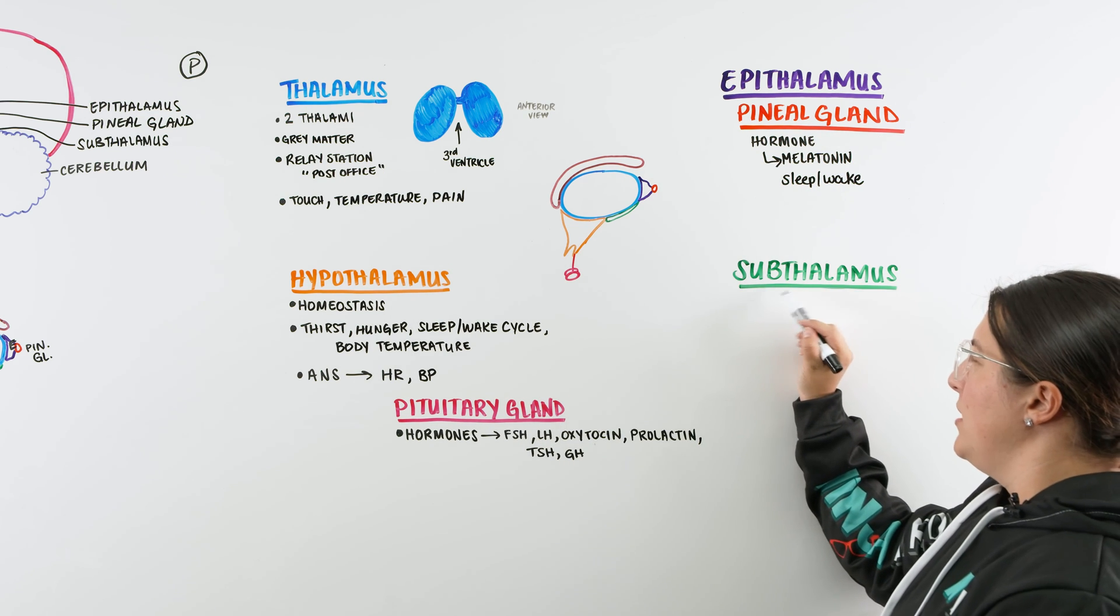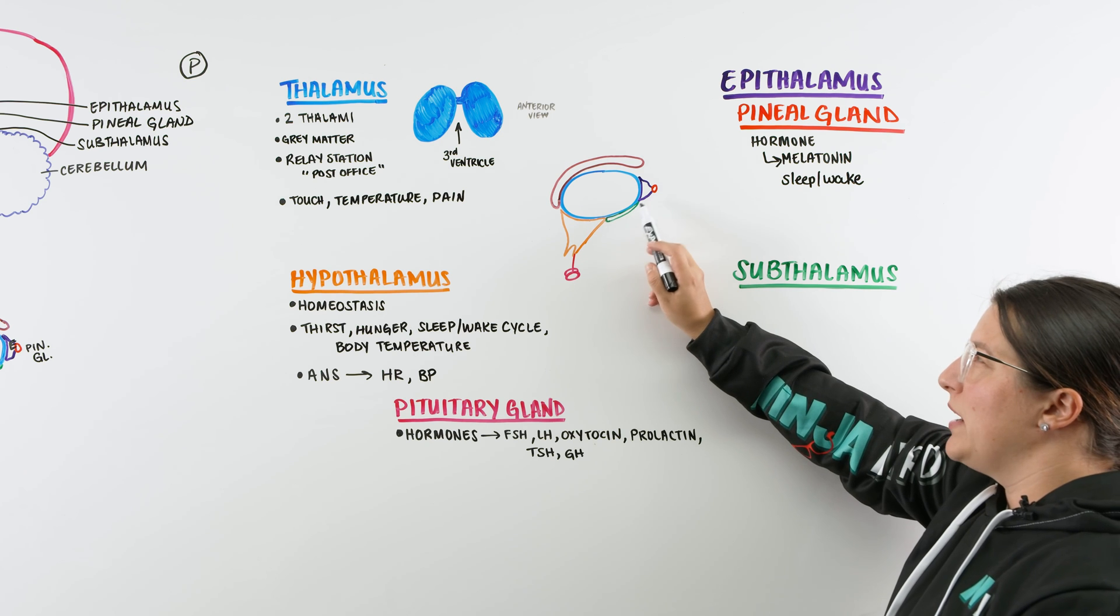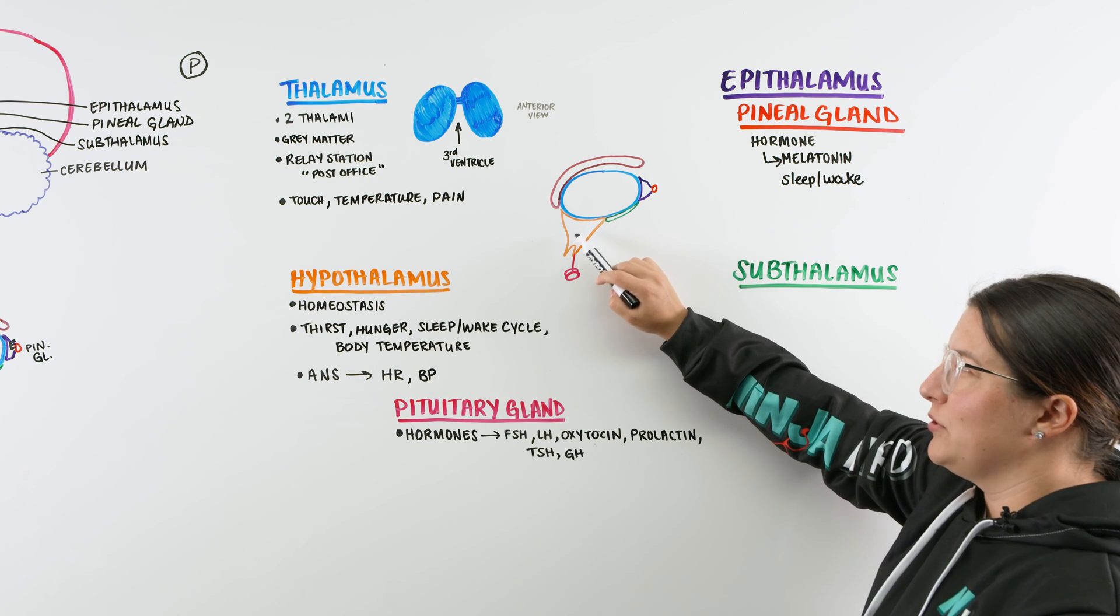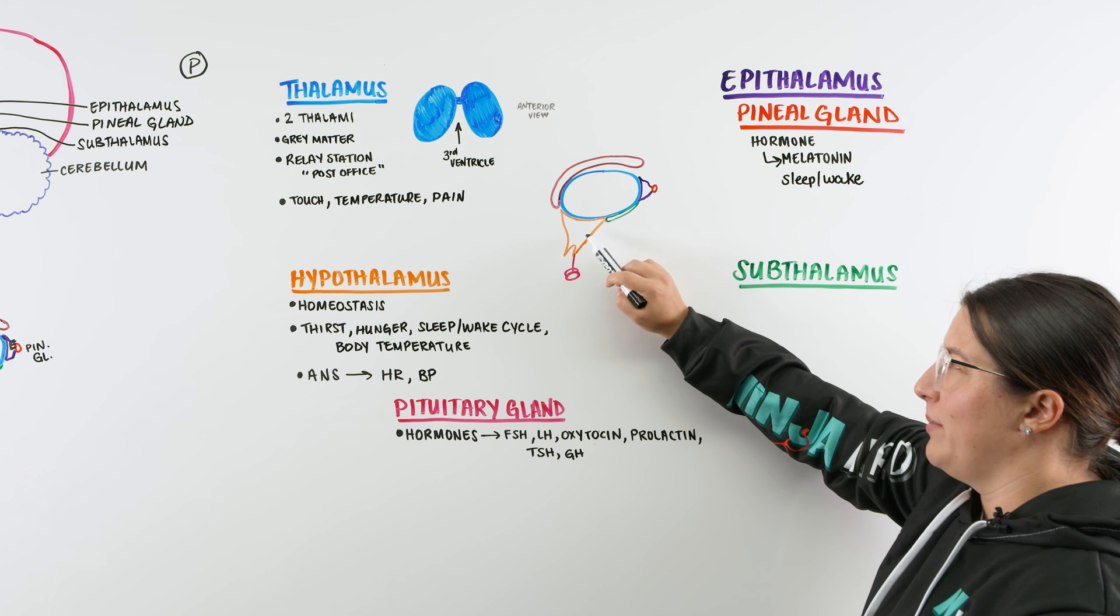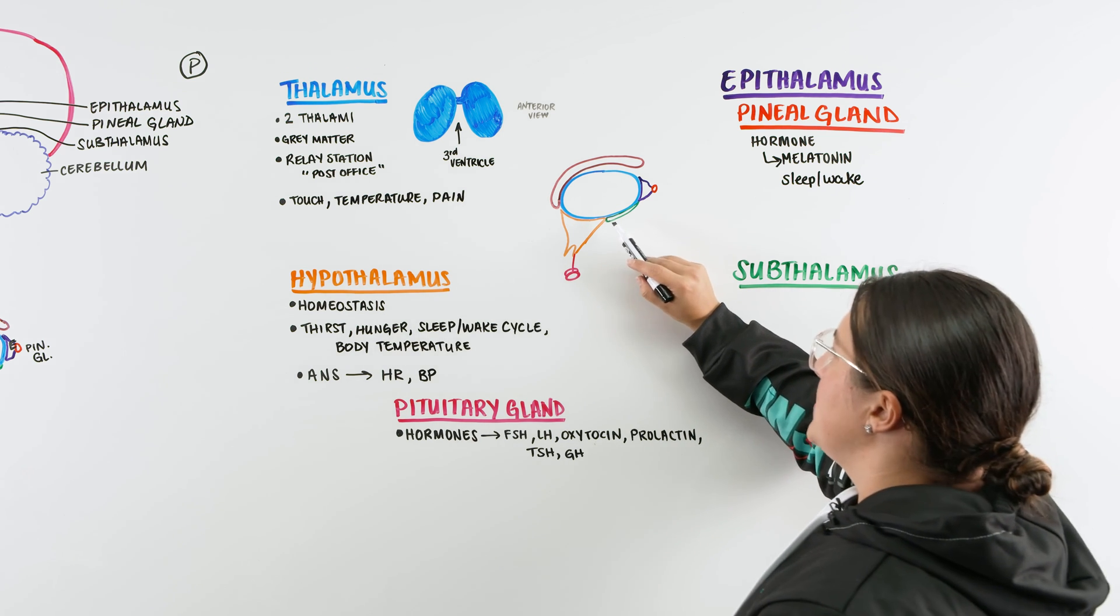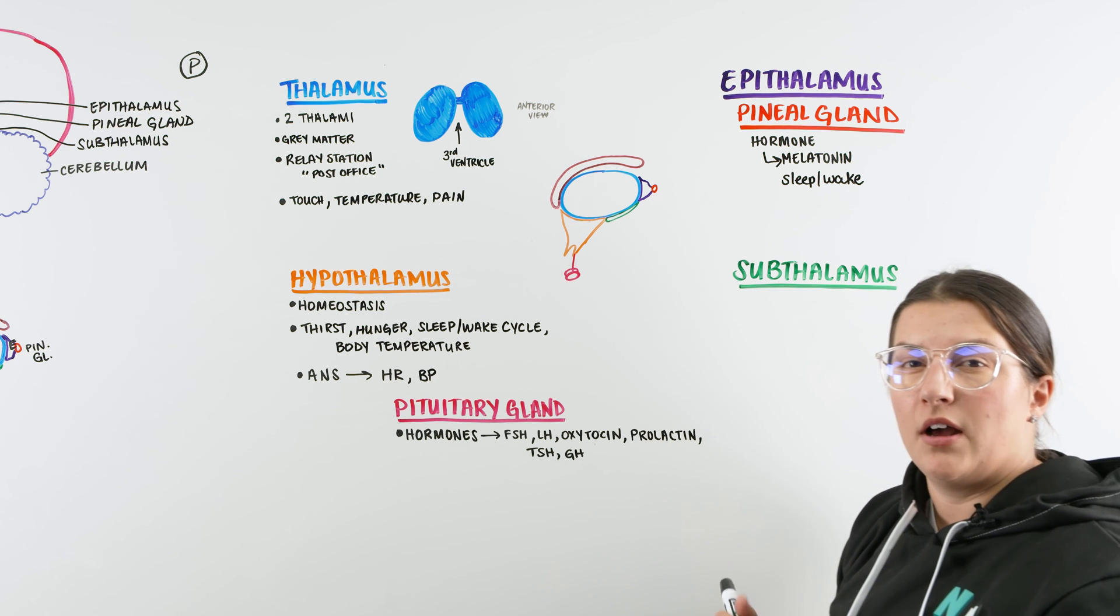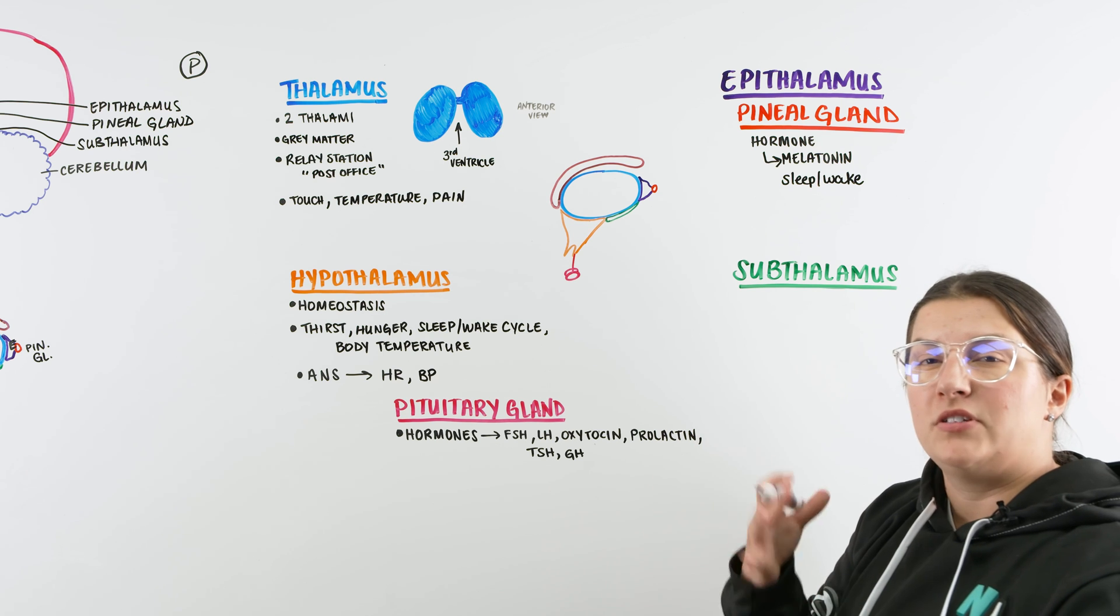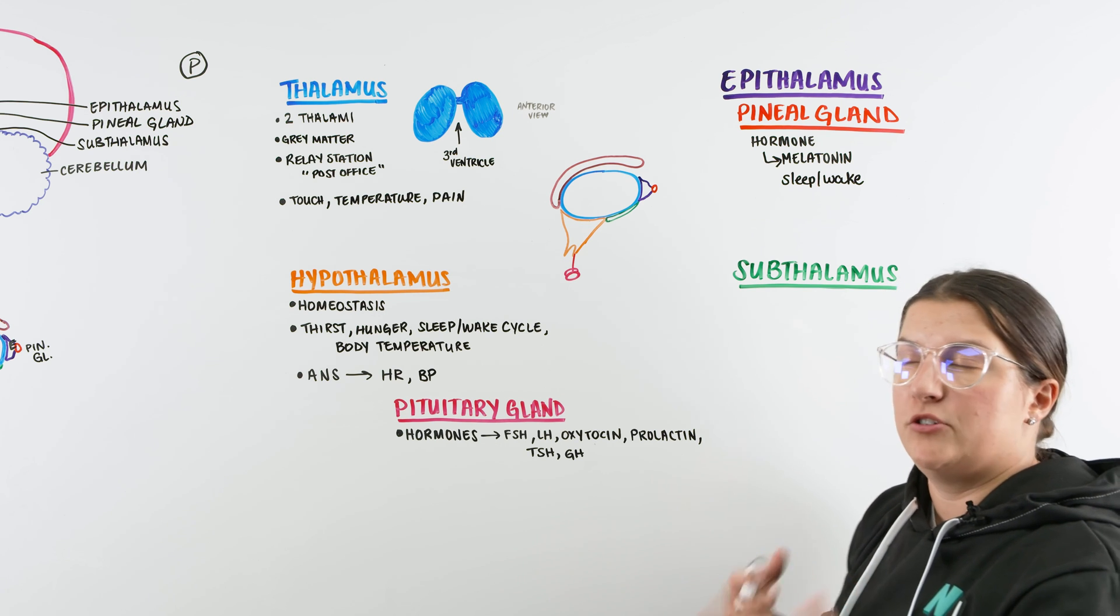And lastly, we have this little area right here, our subthalamus. It's right here underneath our thalamus. You can see it's sub. It's not portion here of the orange, which is our hypothalamus, but over here in this area. And when we talk about the subthalamus, the most important portion of this function is just motor control, motor functioning, understanding where we are, what our body is doing and moving.